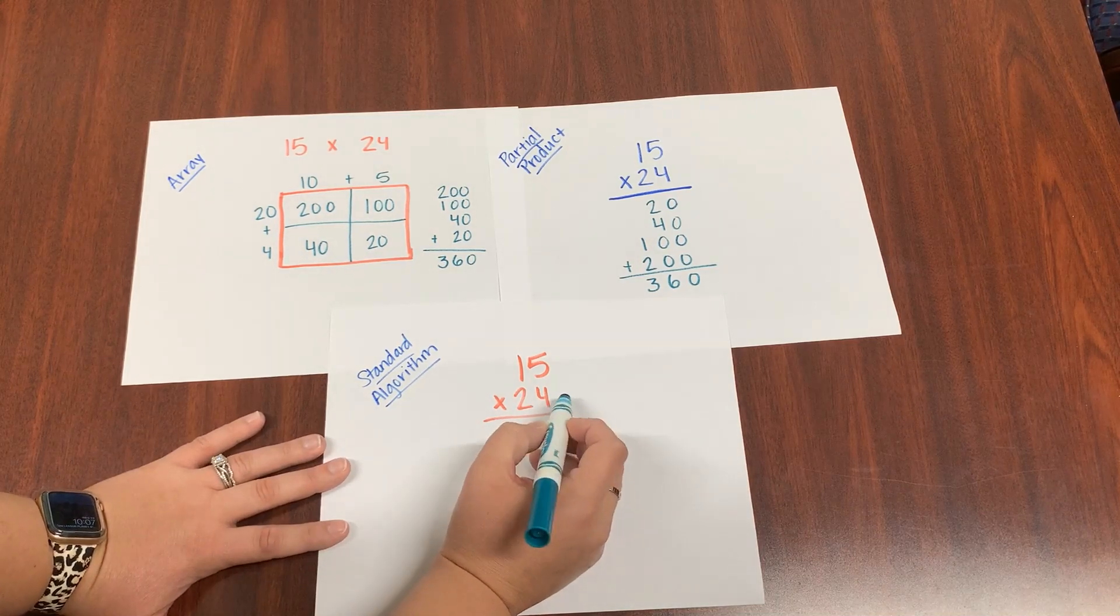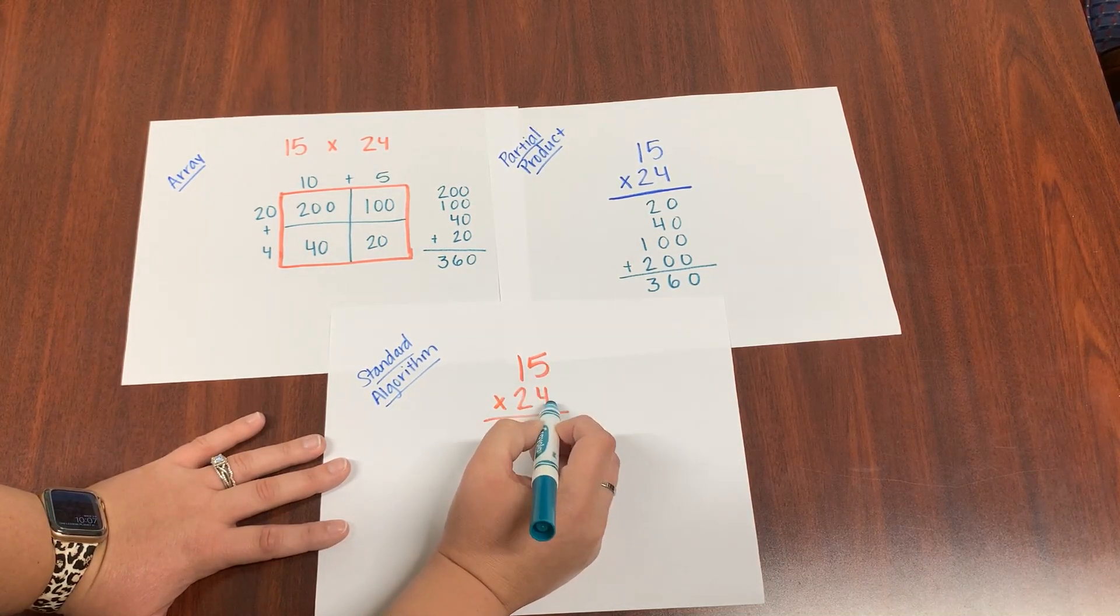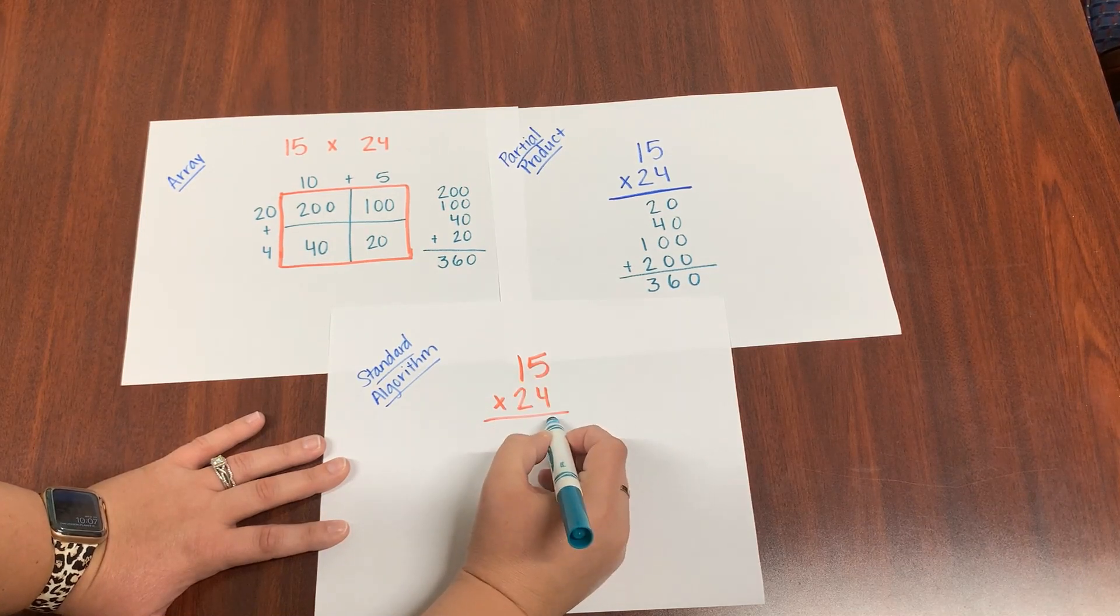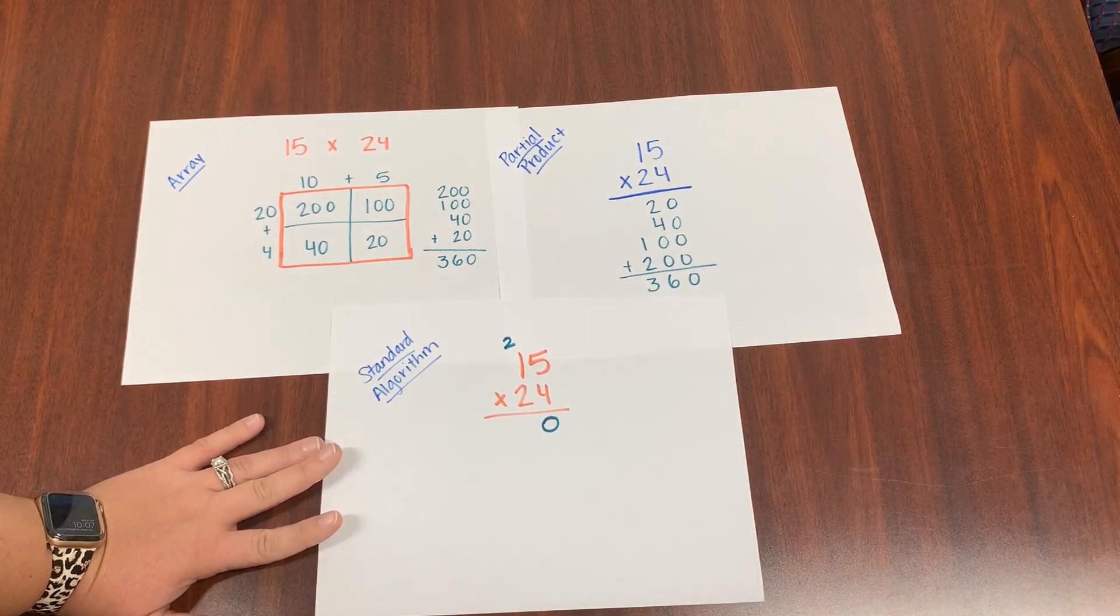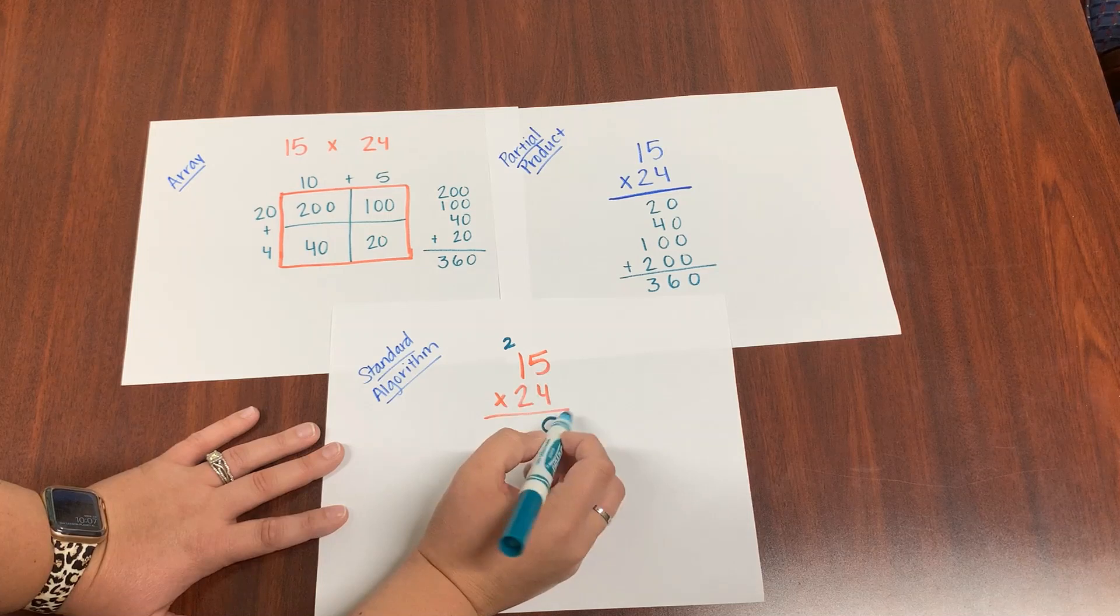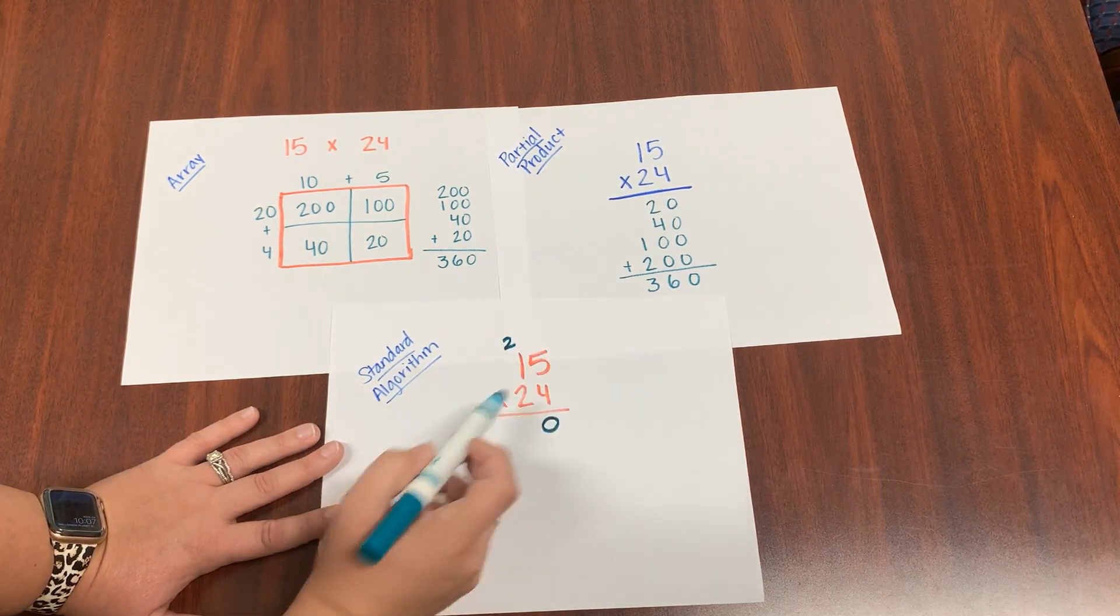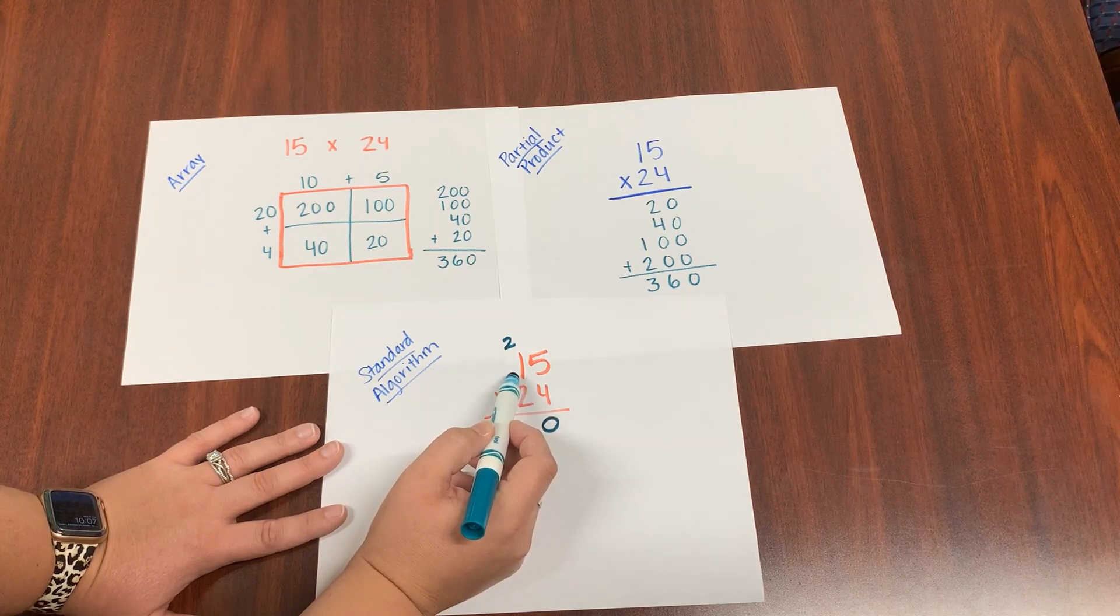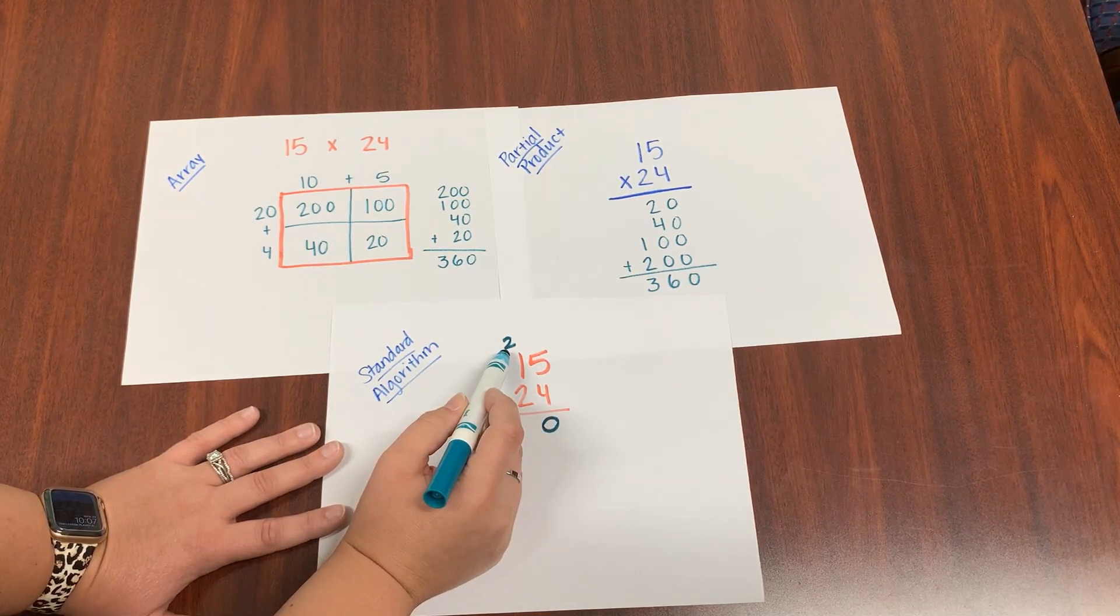So I'm going to start multiplying my ones like I told you with the other problem. Four times five. Four times five is 20. I'm going to put my zero and I'm going to carry my two above the ones. I'll do that one more time. Four times five is 20. Four times five, put my zero down, carry my two above the tens place. Because that was a 20, two in the tens place, carry it above the tens place.